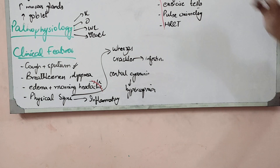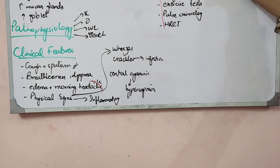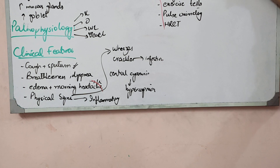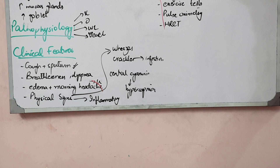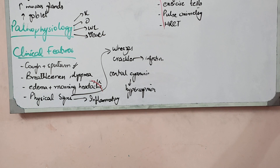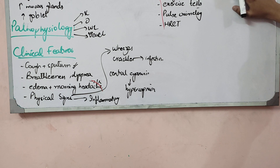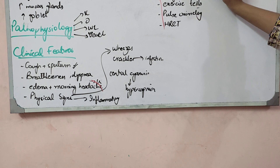A blood count is necessary. We should check whether the patient has anemia, which can also cause dyspnea. When oxygenation is not adequate, RBC production can increase, leading to polycythemia. We also have to do a blood count. In asthma, the eosinophil count is increased — eosinophilia is present — but this does not happen in COPD. In COPD there may be lymphocytes and white blood cells increased, but no eosinophilia.